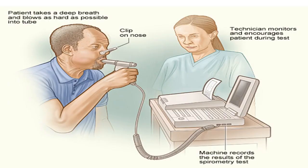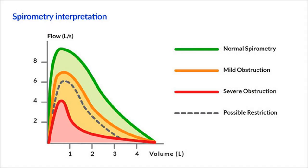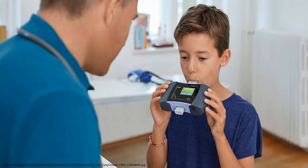Spirometry — the measuring of breath — is the most common form of pulmonary function tests. It measures lung function, specifically the amount or volume and the speed or flow of air that can be inhaled and exhaled. Spirometry is helpful in assessing breathing patterns that identify conditions such as asthma, pulmonary fibrosis, cystic fibrosis, and COPD.